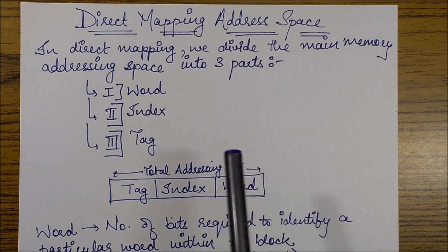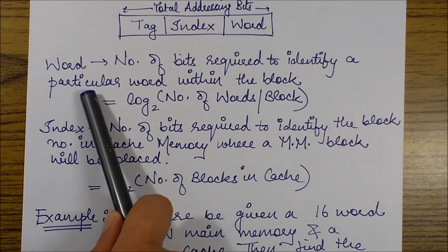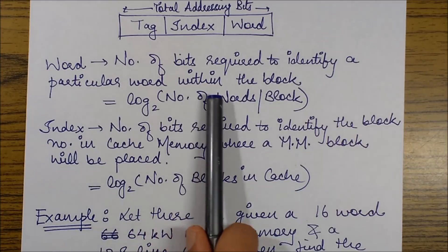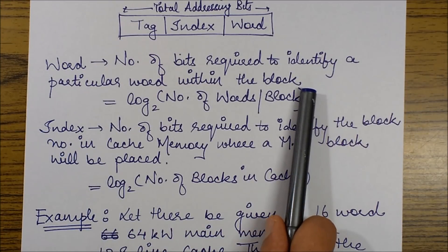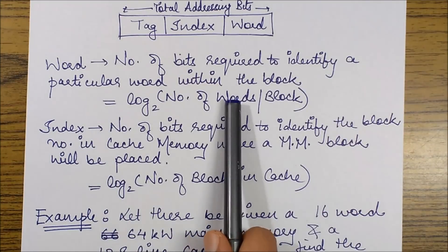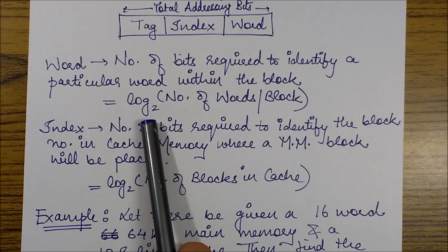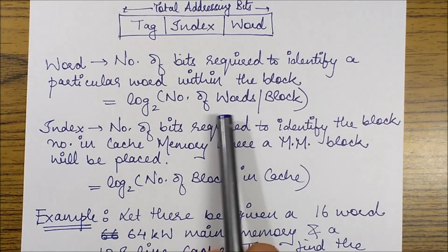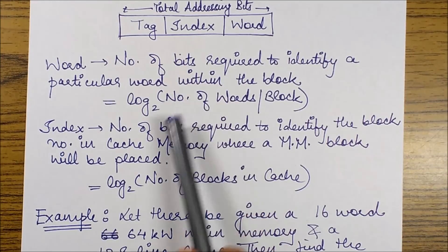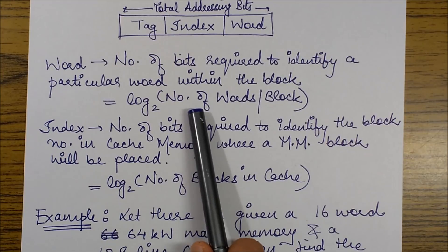First, the word represents the number of bits required to identify a particular word within the block. It is equivalent to log₂(number of words per block). We can also say that this represents the size of the block in terms of the number of words it contains.